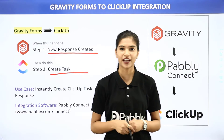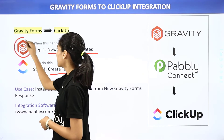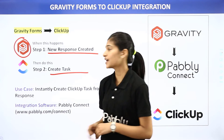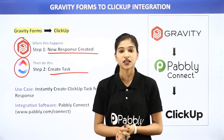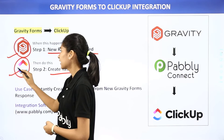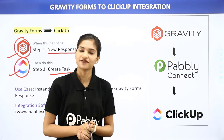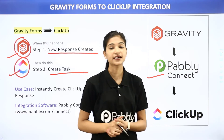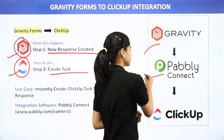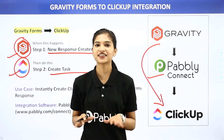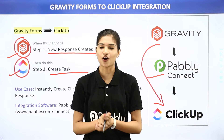Let us know what these two software applications are about. Gravity Forms is a WordPress plugin that allows you to create forms, whereas ClickUp is a cloud collaboration project management tool. The issue is that Gravity Forms and ClickUp don't have any integration between them, and that is why we are going to use Pabbly Connect — an integration software which will help you transfer data from Gravity Forms to ClickUp. The best part is you don't require any knowledge of coding.